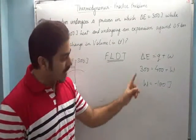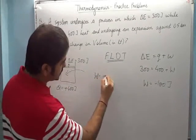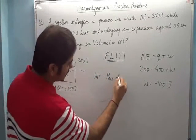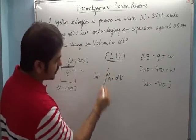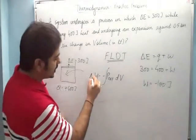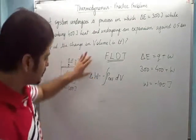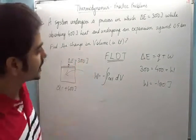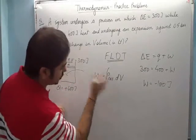Now work done is minus P external dV. If I simply see, work done is actually equal to minus P external dV integrated. Sometimes we write this in a box as delta W also, so the change in work done, or simply we call it work done.